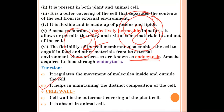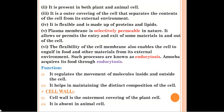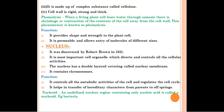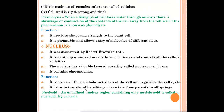The next part of the cell is the cell wall, which is present only in plant cells — it is absent in animal cells. This is the main difference between plant and animal cells. The cell wall is the outermost covering of the plant cell. It is made up of a complex substance called cellulose, which is a non-living thing. Cell wall is rigid, strong, and thin.